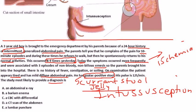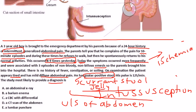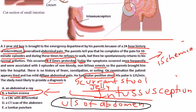So how do you diagnose it? Ultrasound of the abdomen is not listed among the answer choices. If it were, that would be the answer. But since barium enema is listed and ultrasound is not, the best choice to diagnose intussusception in this vignette is barium enema. If both ultrasound and barium enema were present as options, always go with ultrasound.